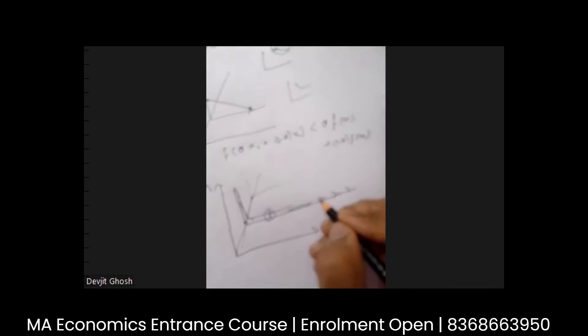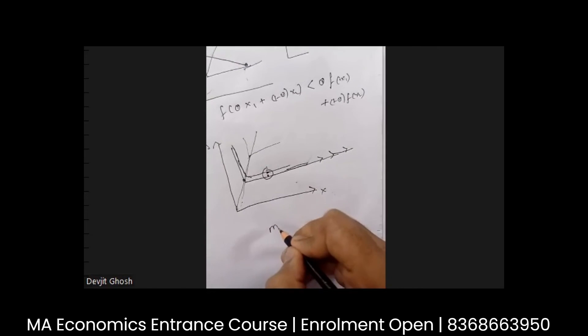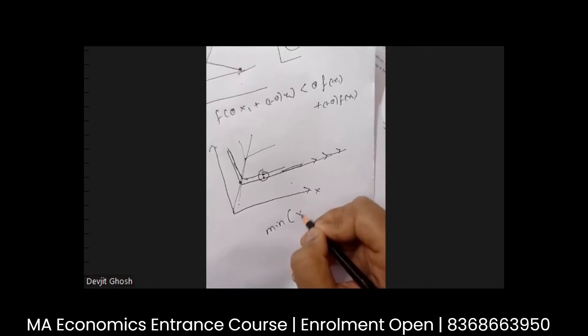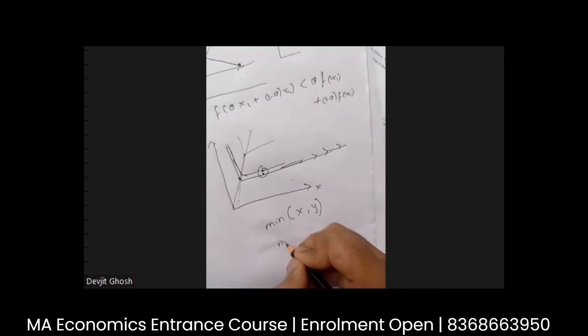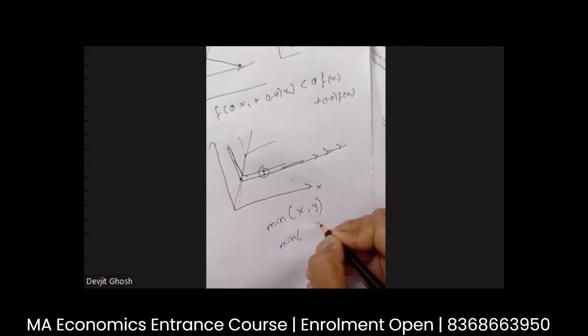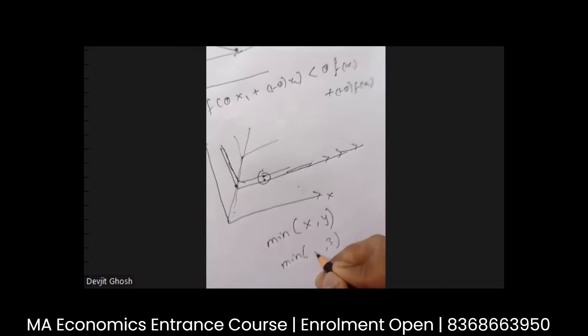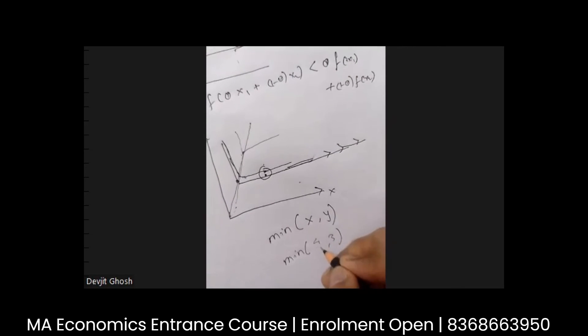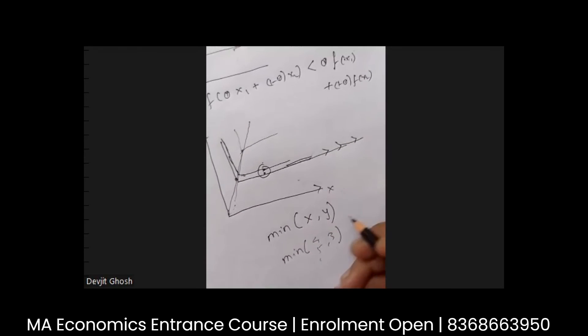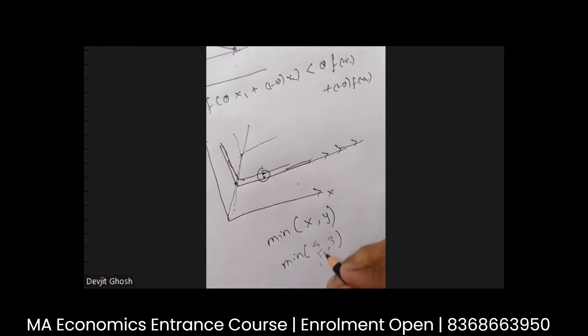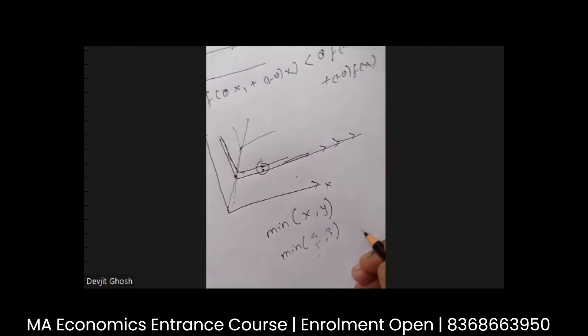So it's basically, say I have min function X comma Y and say I have fixed Y at three. So even if I keep on increasing, say four, five, six, whatever be the value of X, it has to be greater than three, then my utility remains three only.